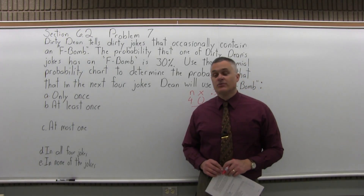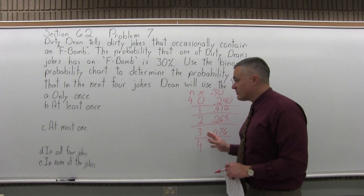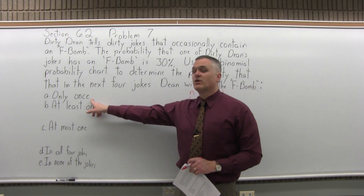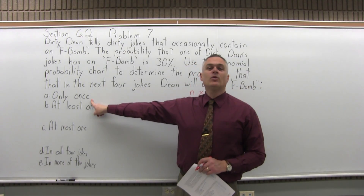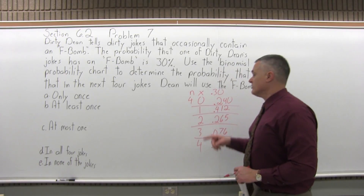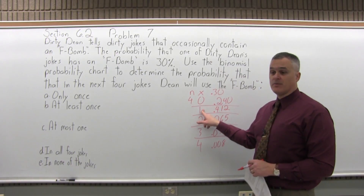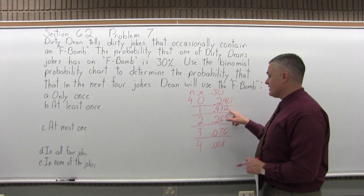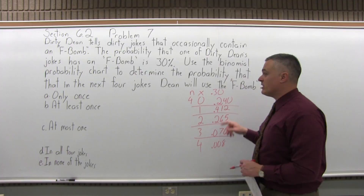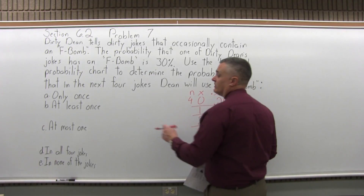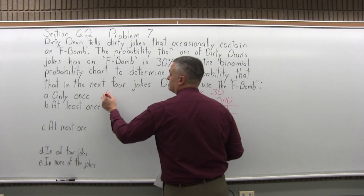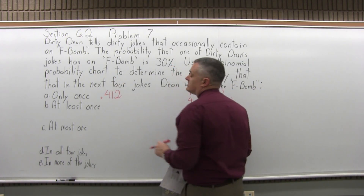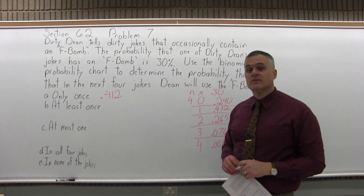Now, using this information, what's the probability that the F-bomb shows up in a joke only once? We go to the part of the chart for one, and the probability is 0.412. So it's about a 41% probability.